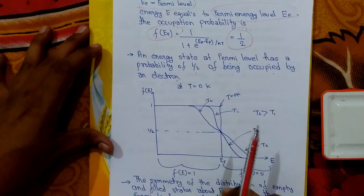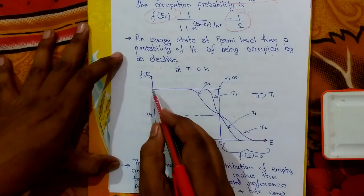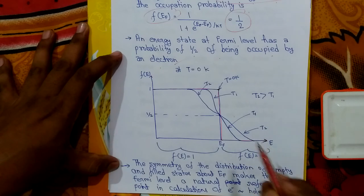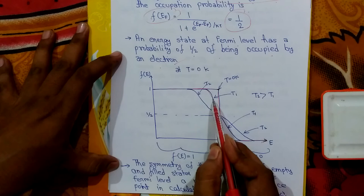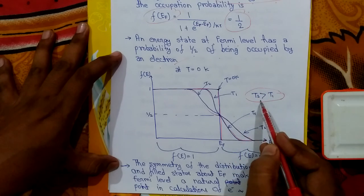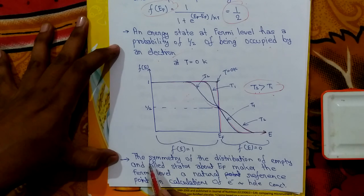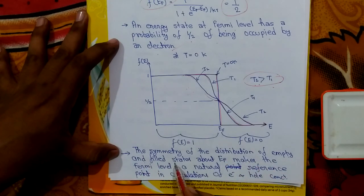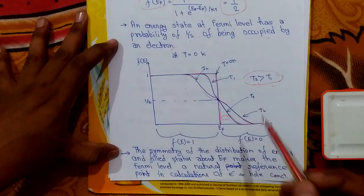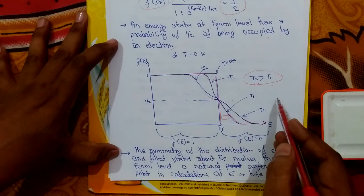This is the diagram of the Fermi-Dirac function plotted with respect to energy. At T = 0 K we get a sharp rectangular graph. As temperature increases, bending occurs in the graph — T2 is greater than T1, and as temperature increases the bending also increases. We can see the symmetry of the distribution of empty and filled states, which depends on whether the material is n-type or p-type and on the temperature.